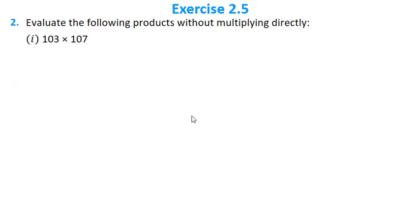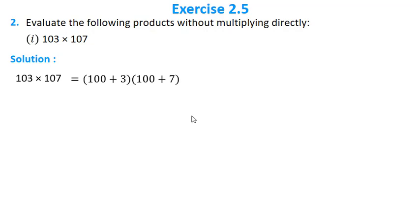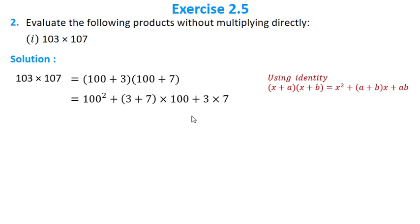The second question asks us to evaluate products using identities. For 103 × 107, we write it as (100 + 3)(100 + 7) and apply the identity (x + a)(x + b) = x² + (a + b)x + ab. This gives 100² + (3 + 7)(100) + (3 × 7) = 10,000 + 1,000 + 21 = 11,021.